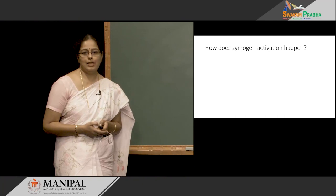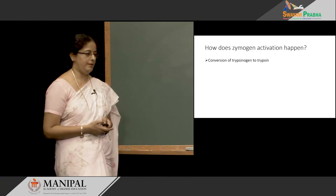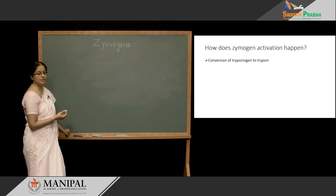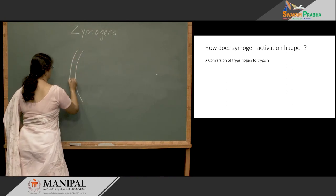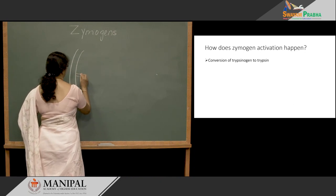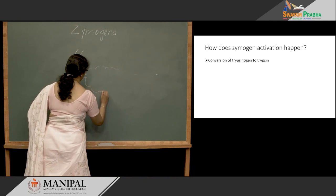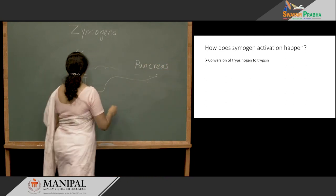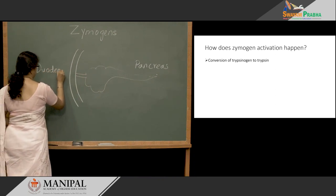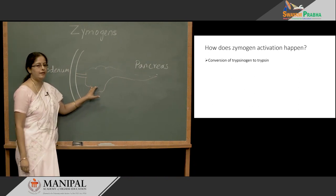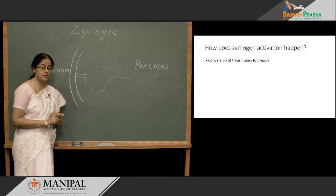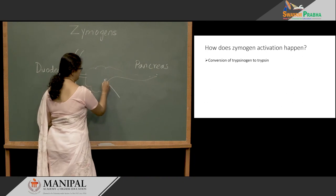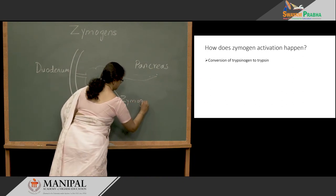Now let us see how Zymogen activation happens, taking the conversion of trypsinogen to trypsin as an example. Let us draw the organ which produces this Zymogen, trypsinogen. This is the pancreas, where pancreatic Zymogens are produced — that includes trypsinogen, chymotrypsinogen, pro-elastase, carboxypeptidase A, and carboxypeptidase B. They are all produced in the pancreatic acinar cells.